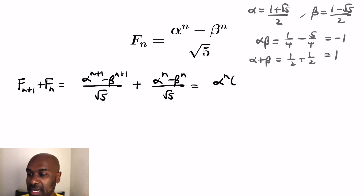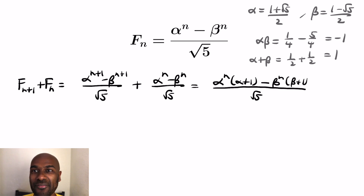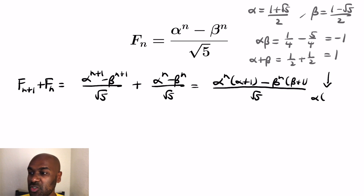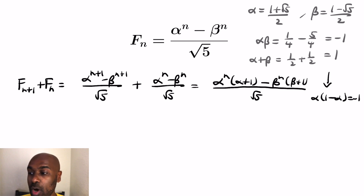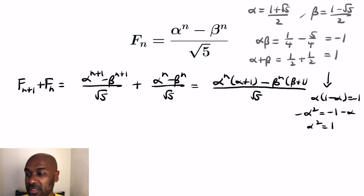If we group things together, we'll get alpha^n times (alpha + 1) when we group the alpha powers together, and then we subtract beta^n times (beta + 1), all over √5. Now, if we look at alpha + 1, we can represent it differently in terms of alpha. Using alpha·beta = −1 and alpha + beta = 1, we get alpha·(1 − alpha) = −1. Expanding, negative alpha squared equals negative 1 minus alpha, so alpha^2 = 1 + alpha. So we can replace that (alpha + 1) with alpha squared.